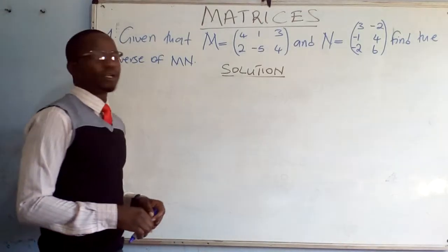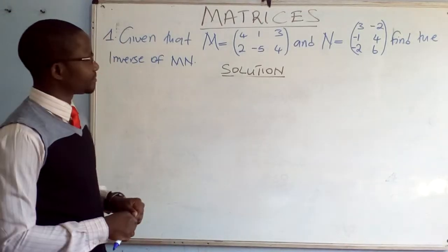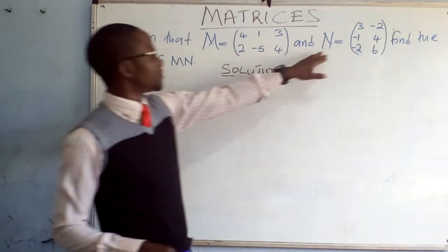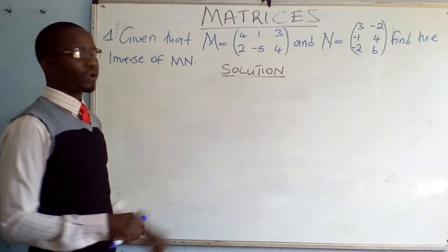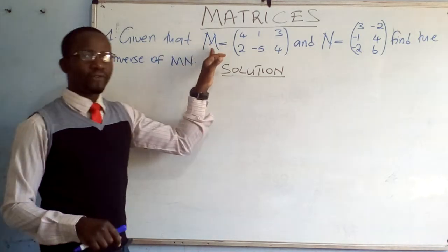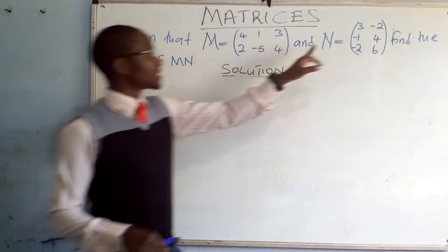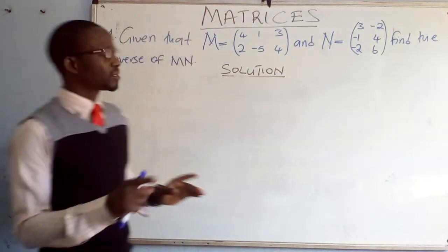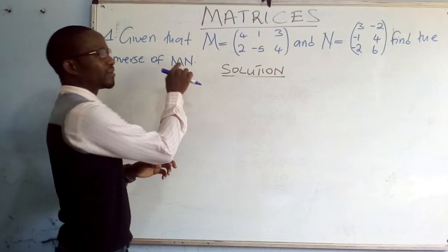This question is coming from a topic called matrices. We have matrix M and matrix N. Find the inverse of MN. They are not asking us to find the inverse of M, and they are not asking us to find the inverse of N. They are asking us to find the inverse of the product of M and N.